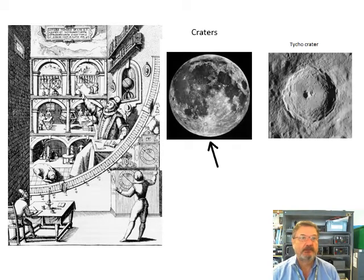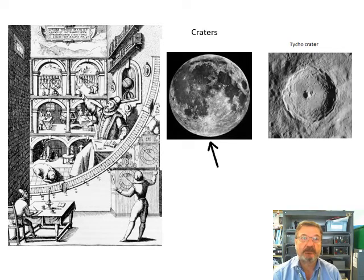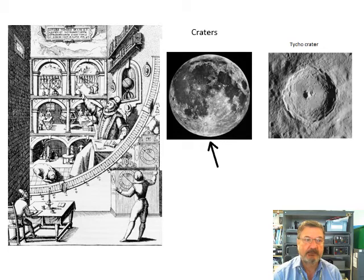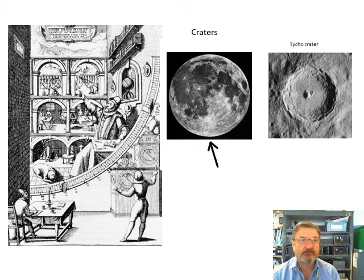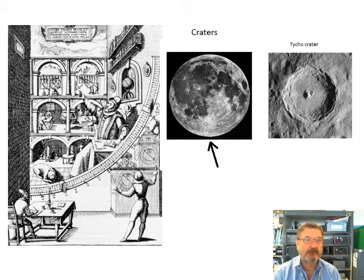Craters first of all. There's an important crater, one that you definitely need to know — you can see it with the naked eye — called Tycho. A very famous astronomer; we're going to learn more about Tycho later in the course. There's the Tycho crater. You should be able to see it with a pair of binoculars or a telescope — it looks pretty good.